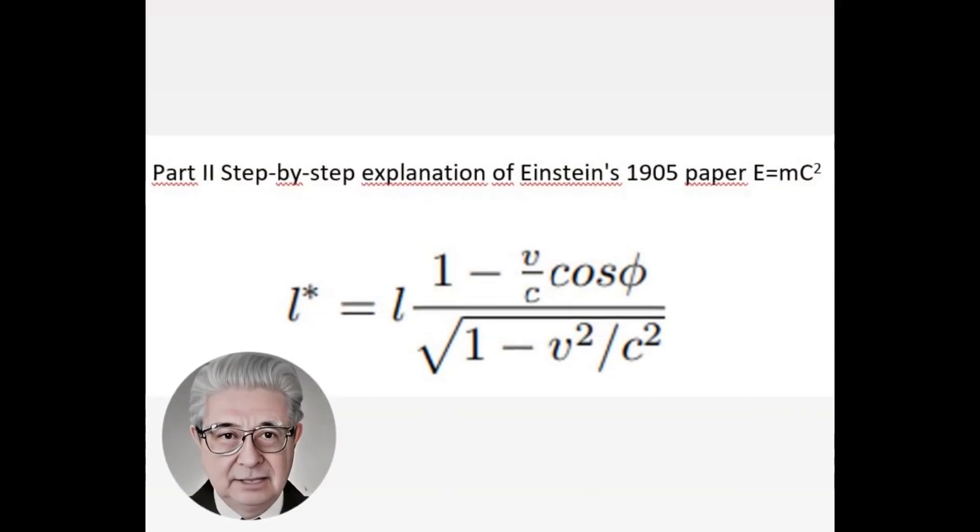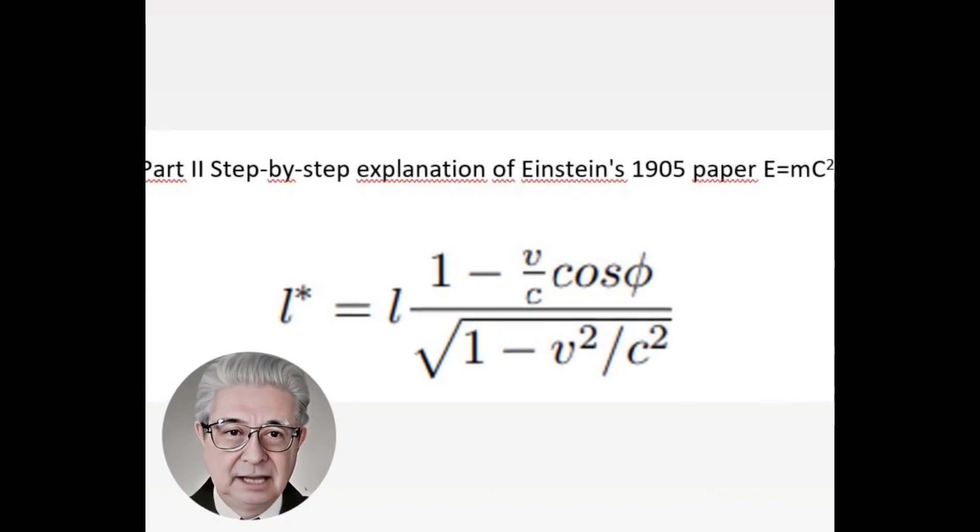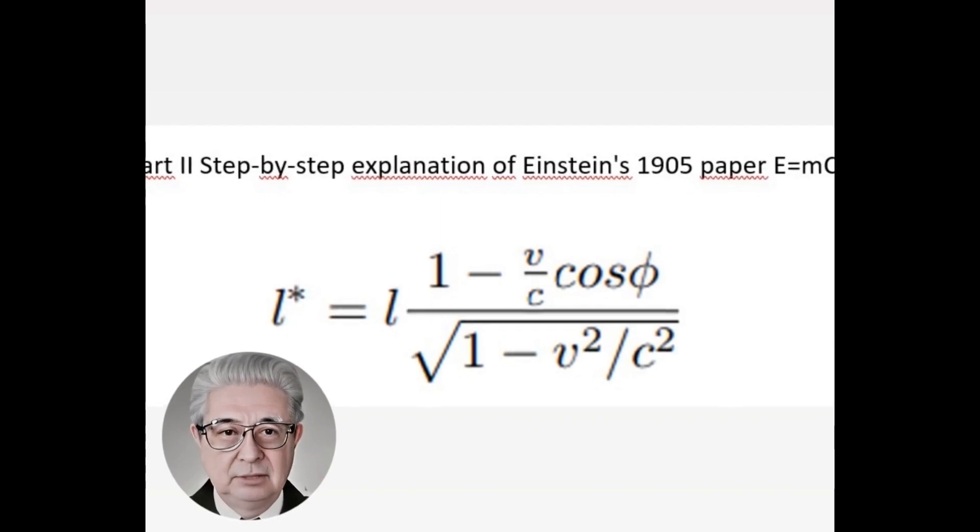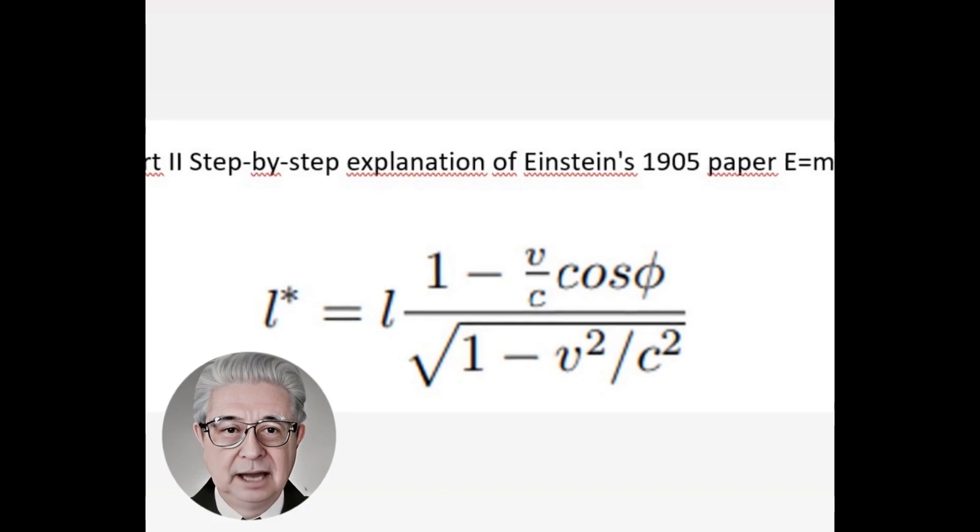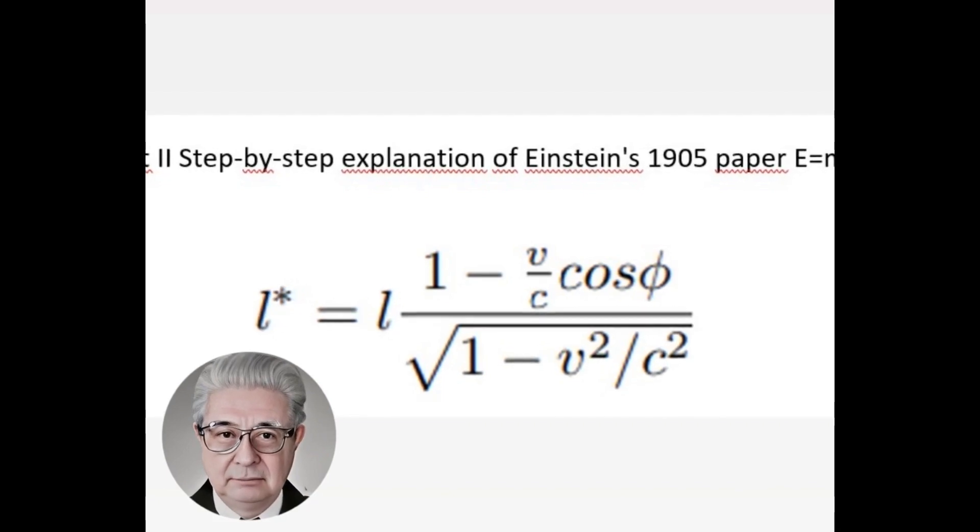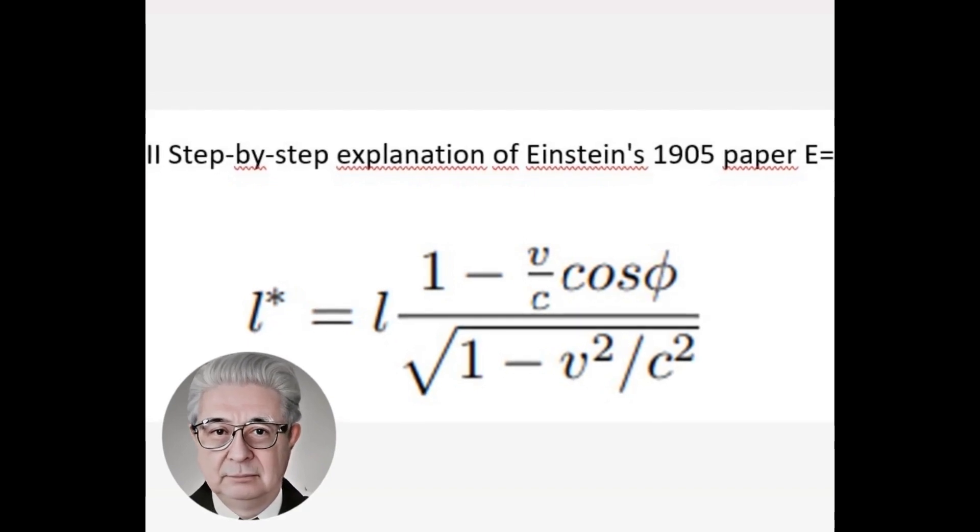That the body at rest emits, in a direction that forms an angle phi with the x-axis, plane waves of light of energy 1/2L measured with respect to the first space of spatial coordinates or moving space, coordinate system at rest or moving, and simultaneously an equal amount of light in the opposite direction. Meanwhile the body remains at rest with respect to the reference system.